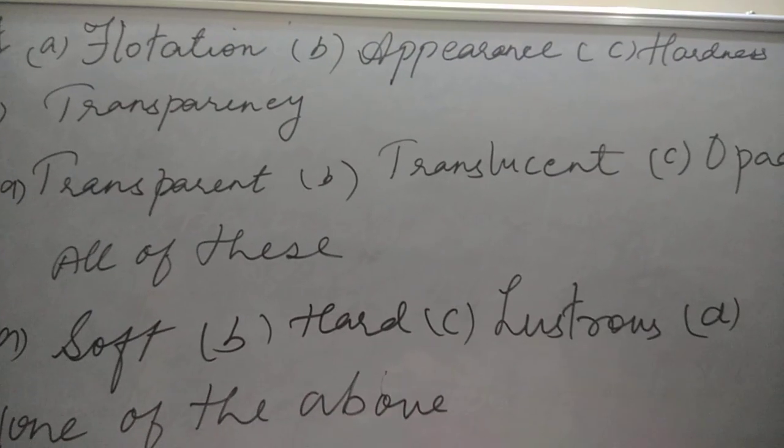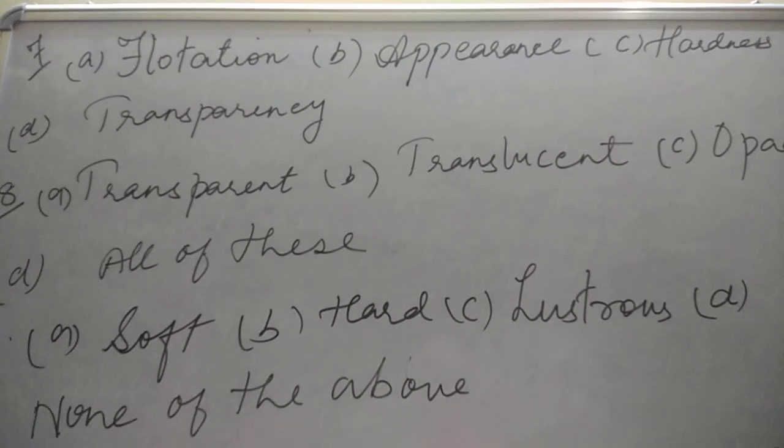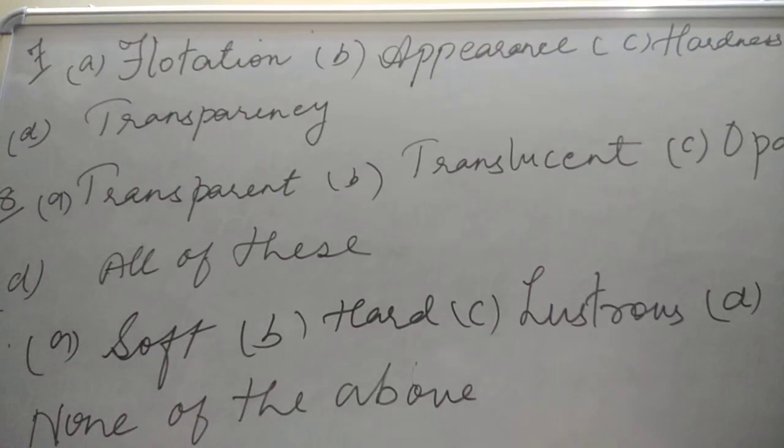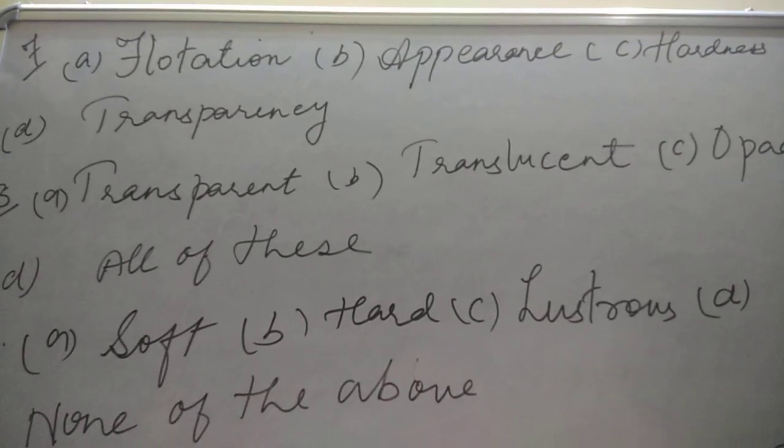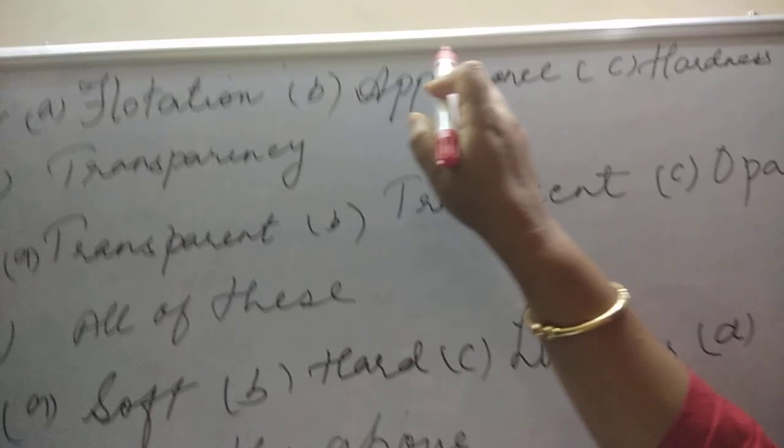Let's start, children, with the seventh question. Which property a blacksmith keep in mind while making a hammer? Hatora. Hatora banane ke liye, what does a blacksmith keep in his mind? Definitely not flotation. Definitely not appearance.